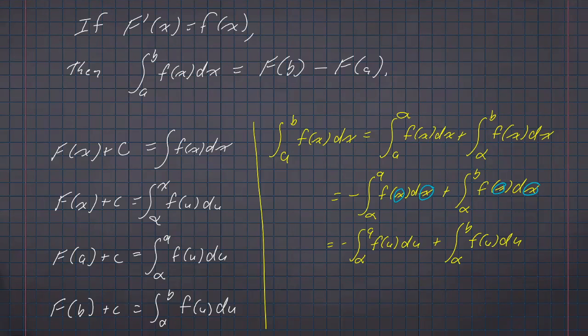But by explicitly stating it like this, we can see that this first integrand is going to be F(a) plus our constant of integration, and the second integrand is going to be F(b) plus our constant of integration.